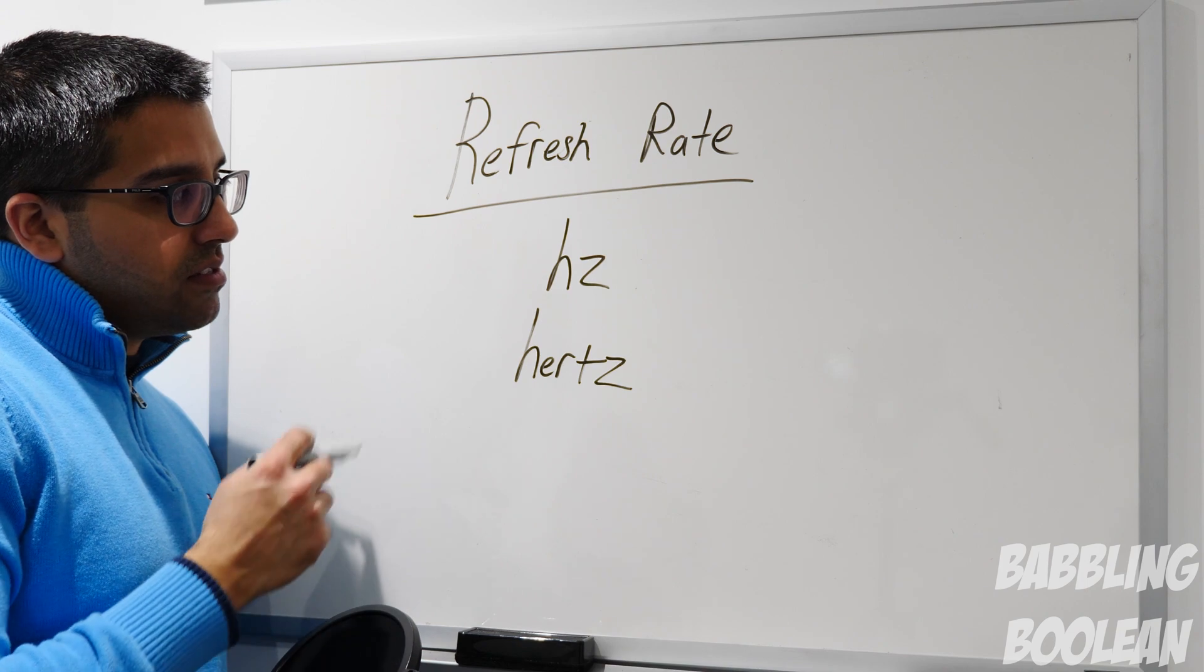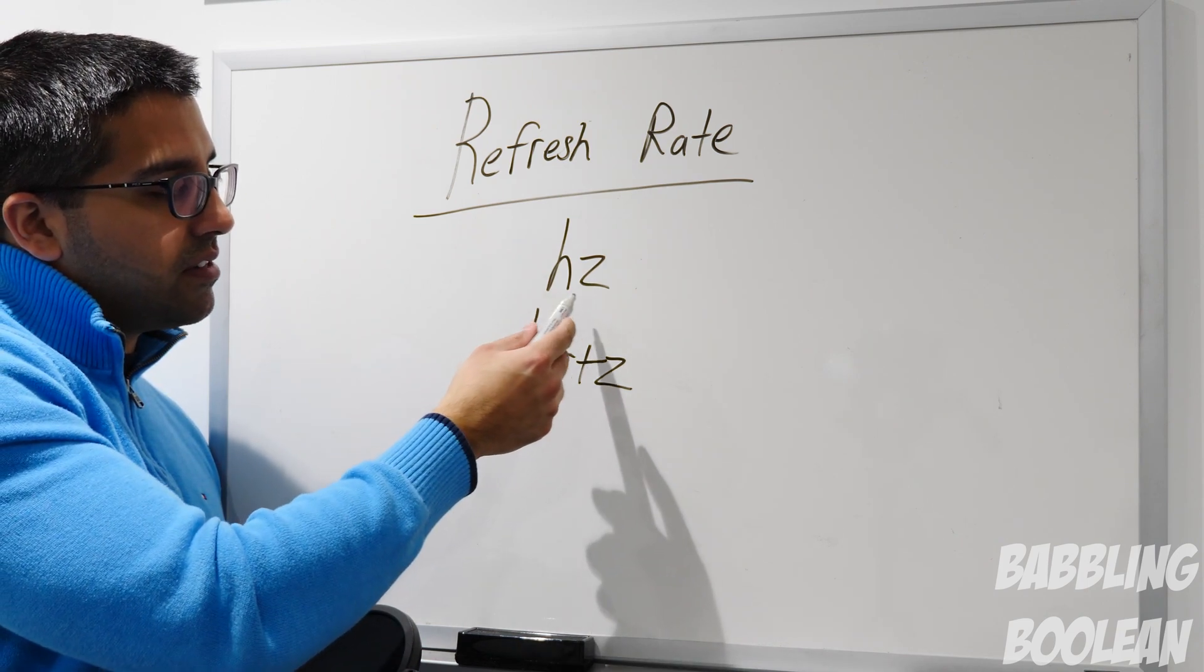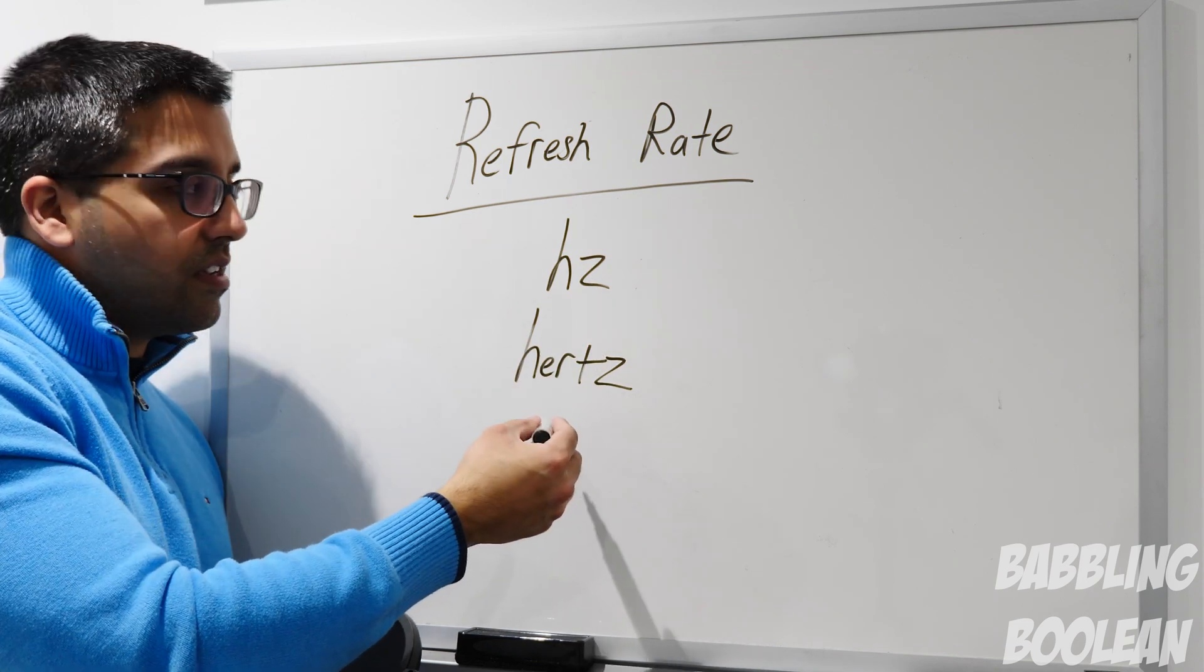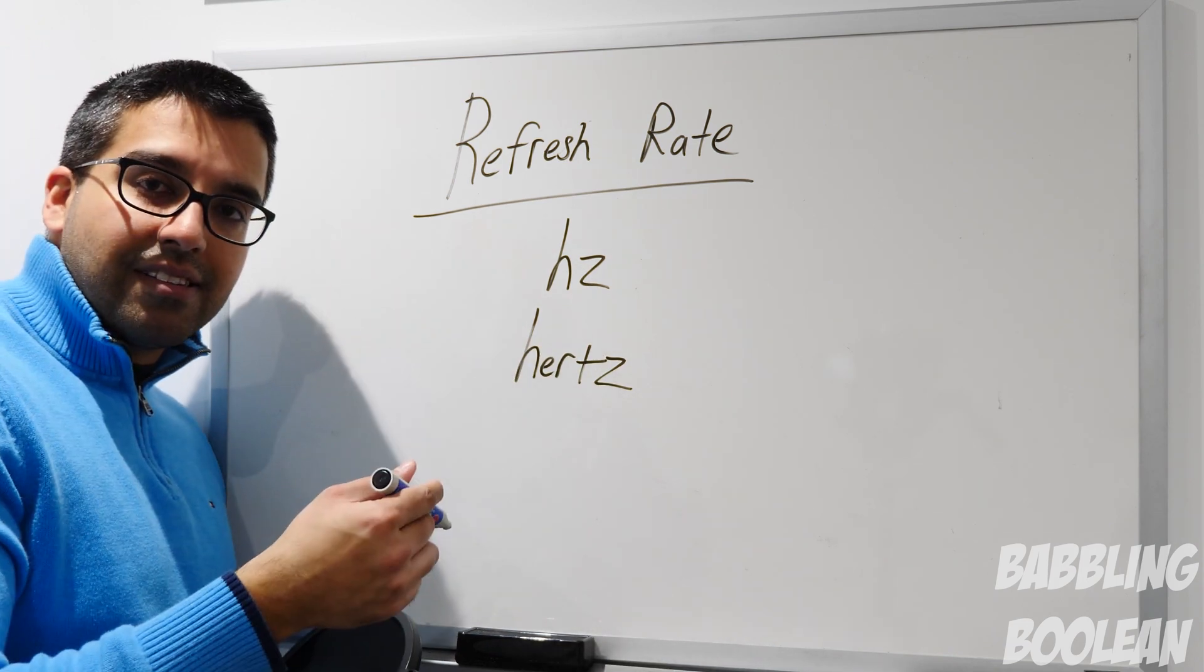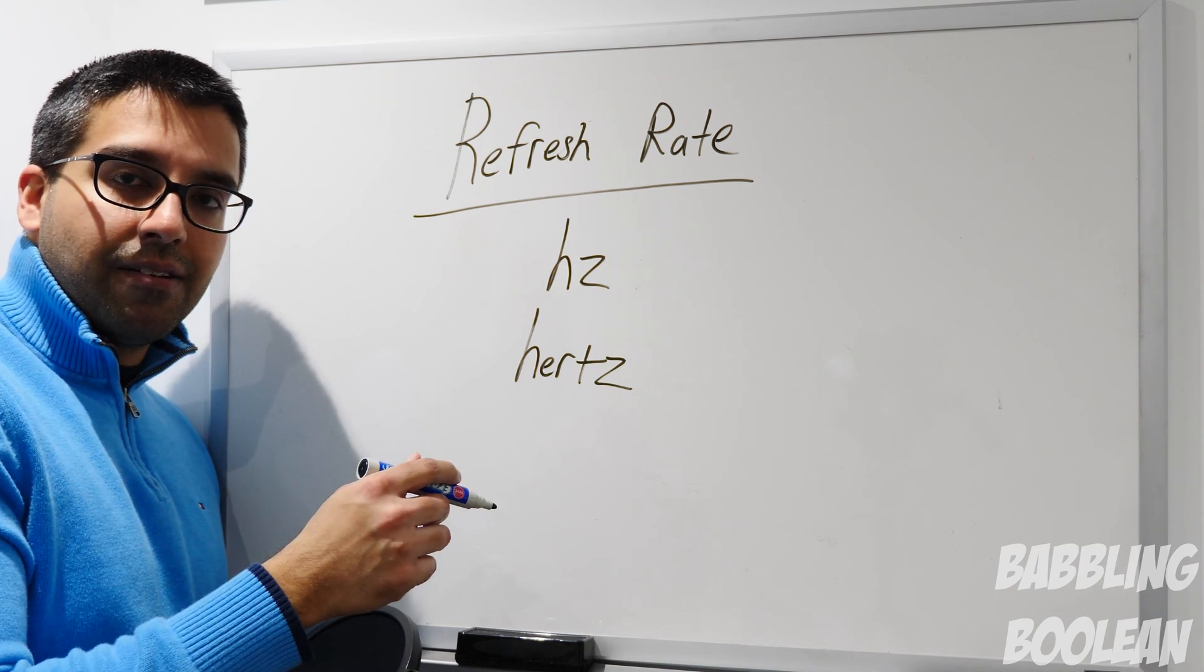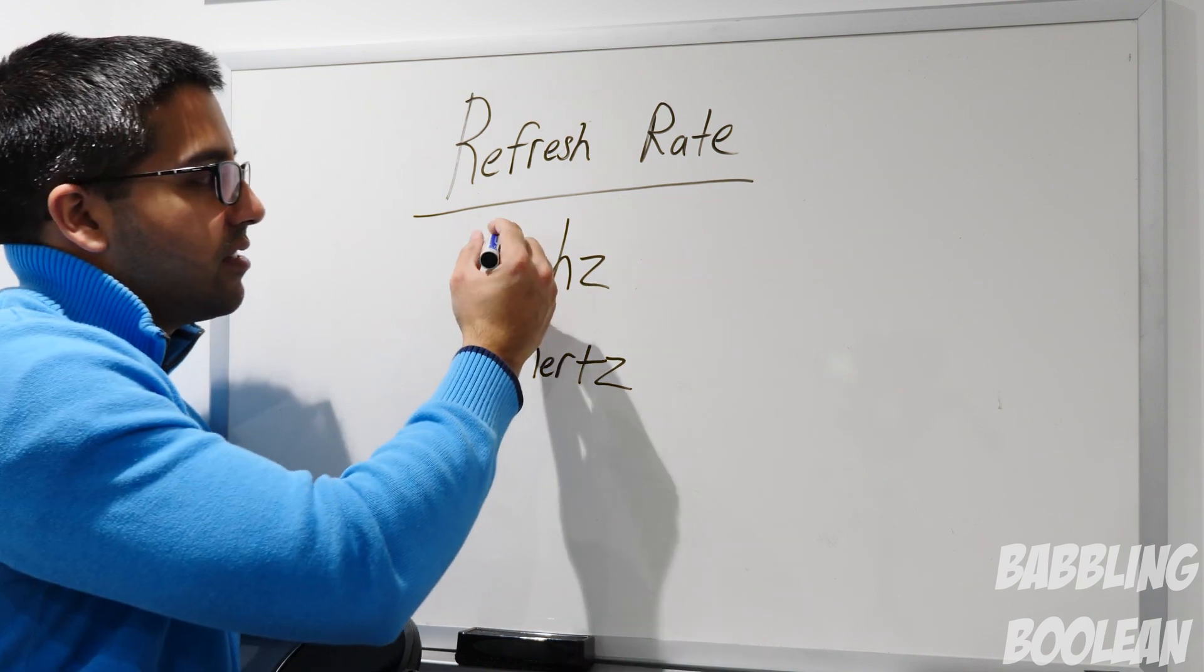So refresh rate is basically, you'll see it when you're buying a TV, for example, by Hz, which stands for Hertz. It's the frequency of how fast the image will refresh on the TV per second. So in North America, the standard is 60.